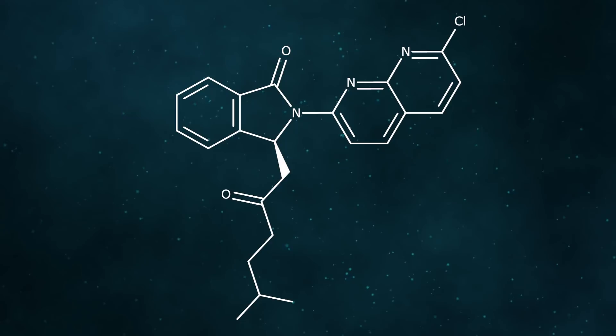Its structure consists of a core isoindolin-1-one ring system with a secondary 7-chloro-1,8-naphthyridine-2-yl ring system bound at its 2-position, and a 5-methyl-2-oxohexyl side chain bound at its 3-position.